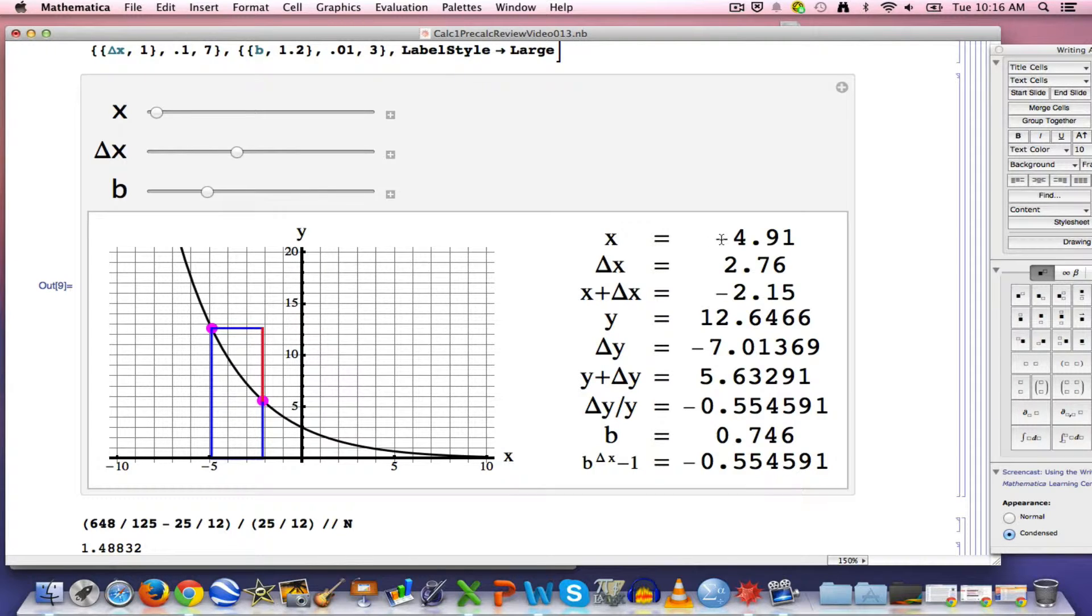And I can see all these quantities. Let's look at all of these. The initial value of X is negative 4.91. That's this value right here. Delta X, the change in X is 2.76, so X is going from close to negative 5 up to here, which is about negative 2.15. That's X plus delta X.